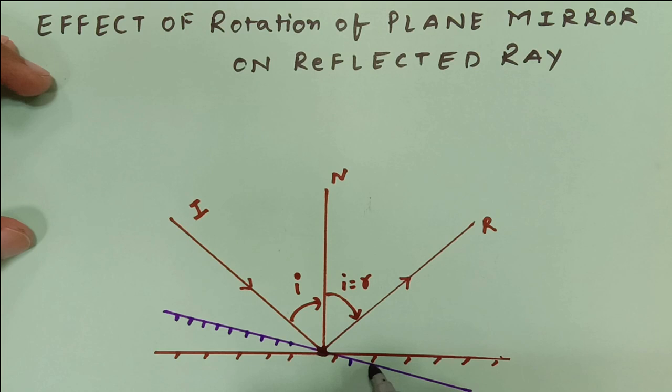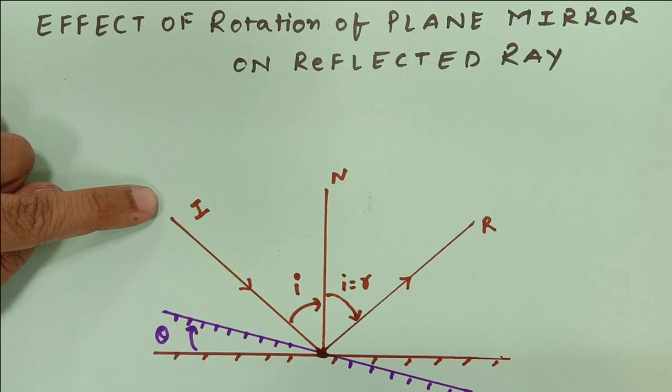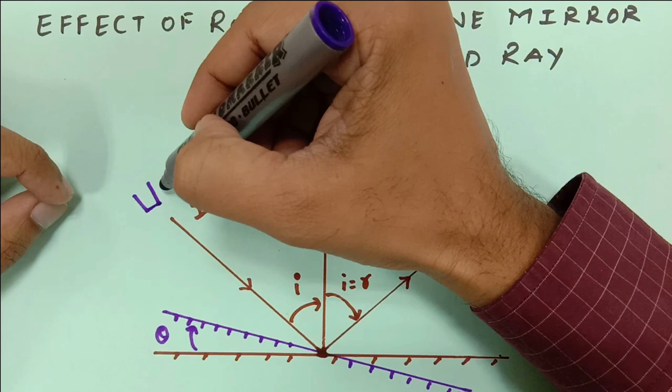This is the new mirror position, and I have turned this mirror by angle theta. I am ensuring that the incident ray stays at the same point, at the same location.